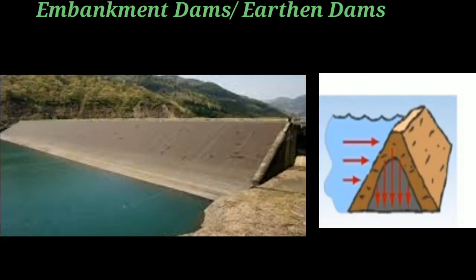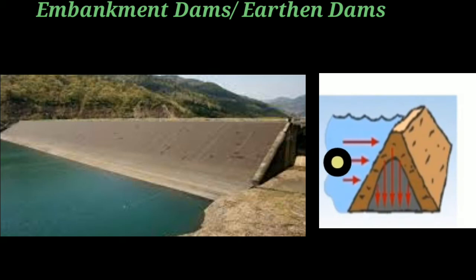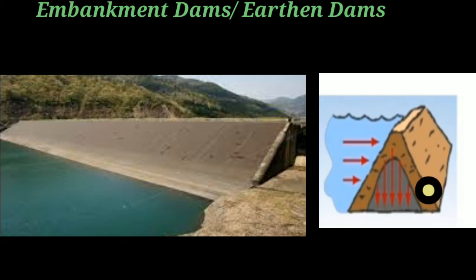Now let's discuss embankment dams further. As you can see in the image, the horizontal flow of water is shown, and this is the vertical change — meaning the vertical flow of water through the embankment structure.